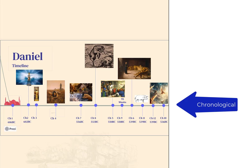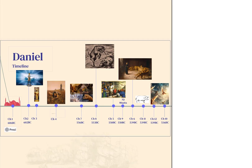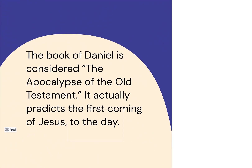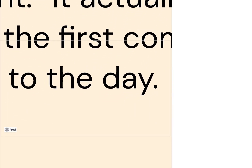There's a really good reason for that and I'm pretty excited to show that to you, so stick around and we'll discover it together. The book of Daniel is considered the apocalypse of the Old Testament, and it actually has a prediction of the birth of Christ to the day.